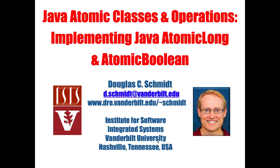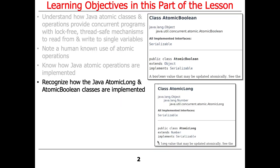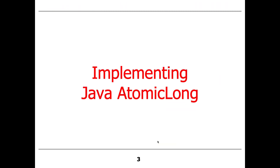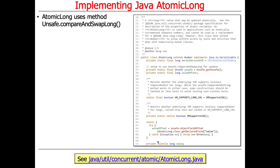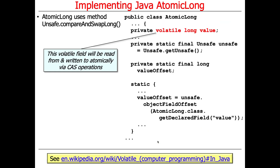We're now going to take a look at how Java AtomicLong and AtomicBoolean are implemented. You'll see that they're very similar, and that they build on those atomic primitives that come with Java Unsafe. AtomicLong, as the name suggests, contains a value field that can be updated atomically by various methods. Under the hood, it uses the Unsafe compareAndSwapLong method.